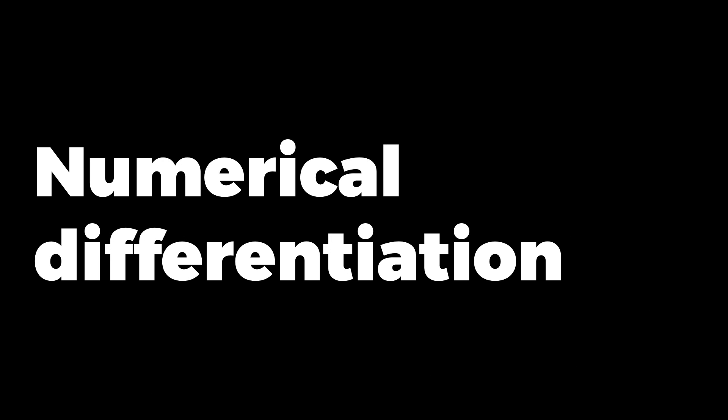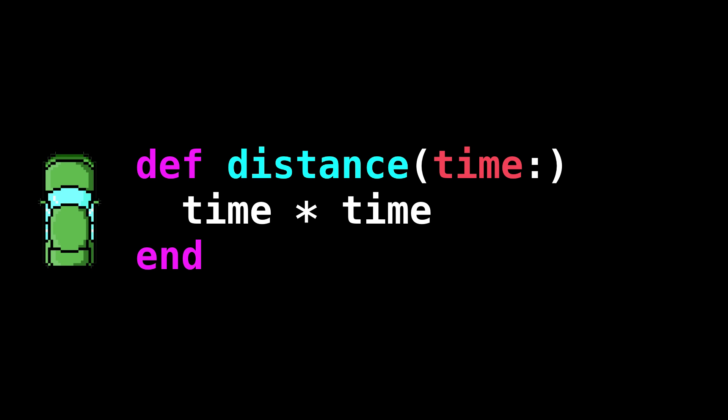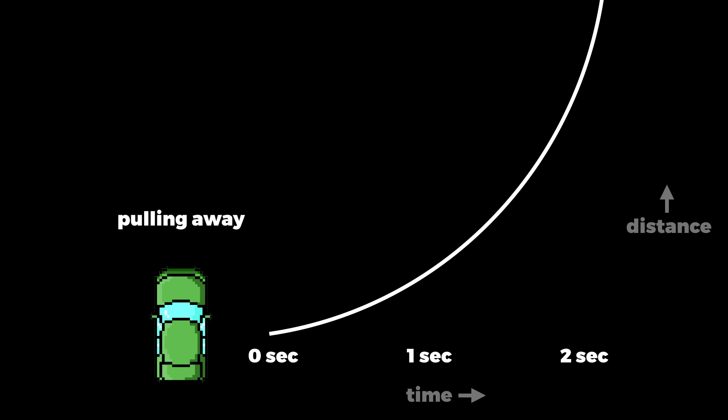The other traditional strategy is called numerical differentiation. To do that, instead of representing the function's expression as a data structure, we implement it directly as a program. Here's the green car's distance function in Ruby. The idea of numerical differentiation is that we can guess the rate of change at a particular value by picking a nearby value and looking at the slope of the line that connects them. The slope of that line doesn't quite match the curve, so it's only an approximation.